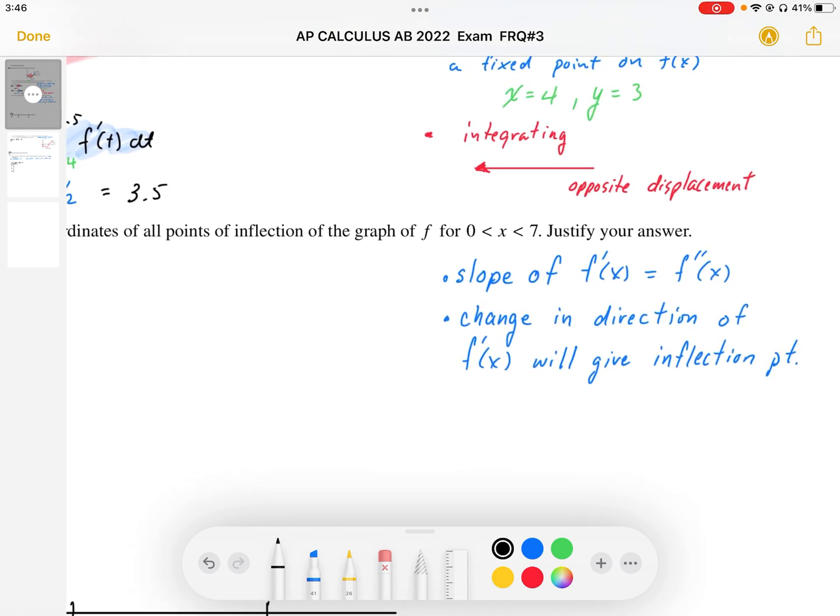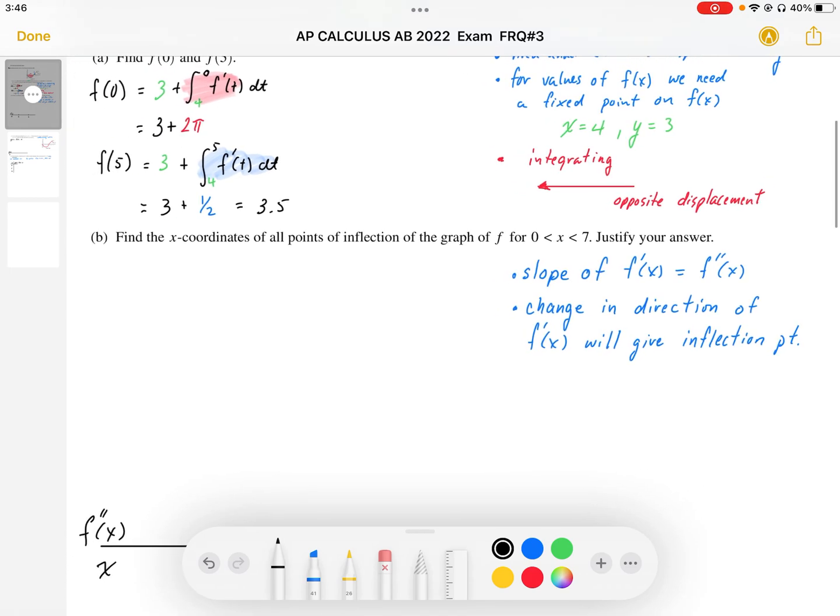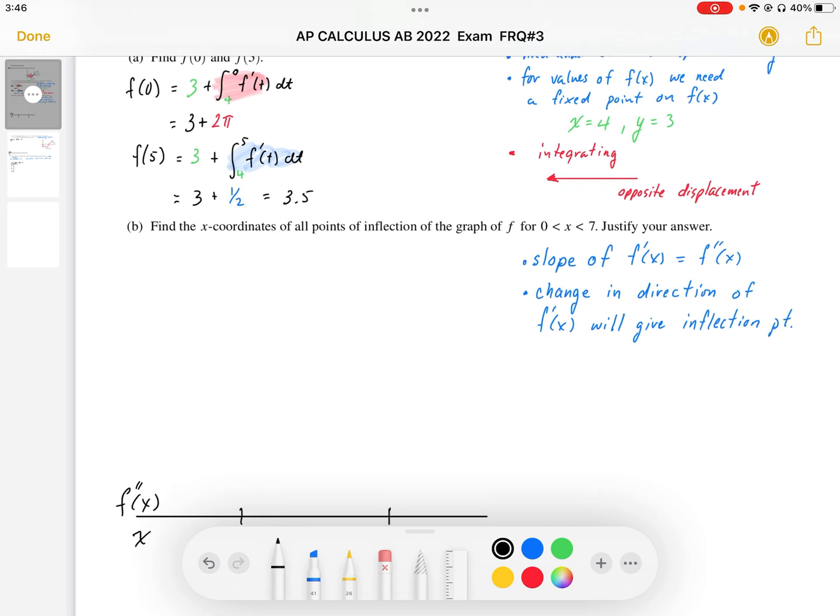In fact, the change in direction of f prime from positive slope to negative slope will give us positive concavity to negative concavity, which is an inflection point. Or we can go from negative slope on f prime to positive slope on f prime. We're then going to be talking about negative concavity to positive concavity, and that's going to give us an inflection point. So really, we're looking for change in direction.